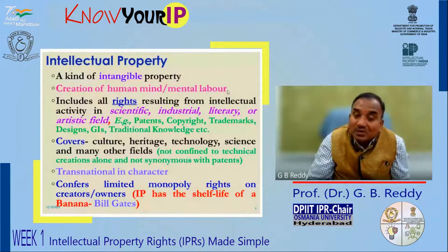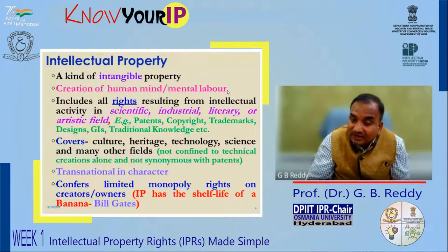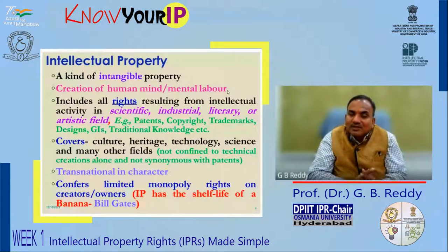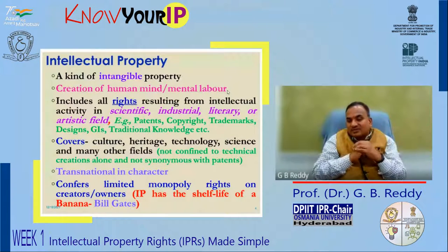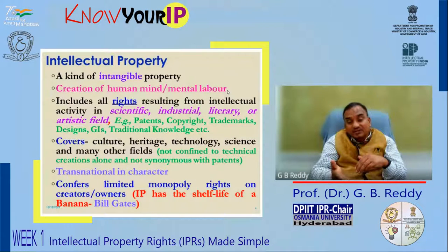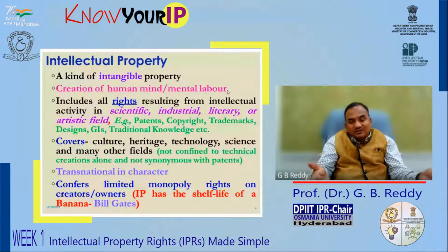When we are talking about intellectual property rights, they are in the form of patents, copyright, trademark, design, GI, traditional knowledge, plant breeders rights, new plant varieties, and more. In some jurisdictions, even trade secrets are considered as intellectual property rights. Intellectual property is not confined only to technical creations and is not synonymous with patents. It covers cultural property, it encompasses heritage, and it protects creations in the field of science, technology, engineering, management — in almost every aspect of human life, intellectual property can make its presence felt.